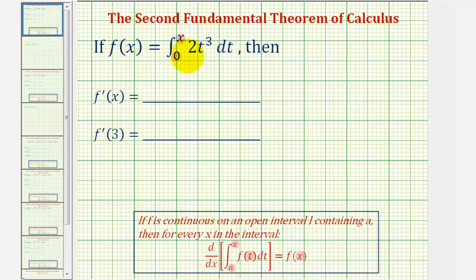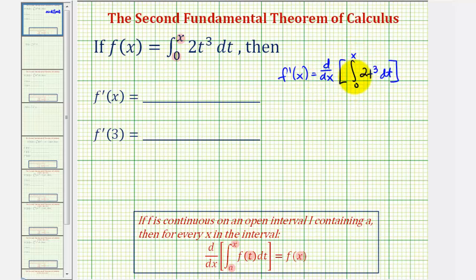So if this integral is equal to f of x, that means f prime of x would be equal to the derivative with respect to x of our integral. The derivative of this integral would just be equal to the function where we substitute x for t. So f prime of x is just equal to two x to the third.